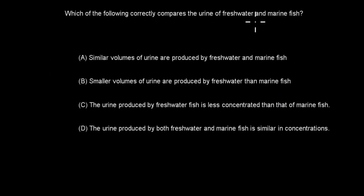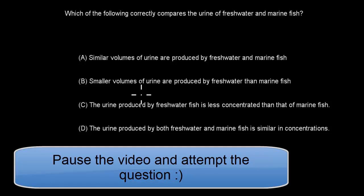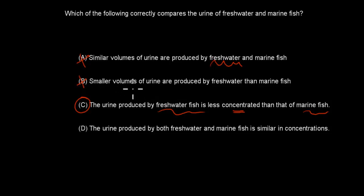Next: Which correctly compares the urine of freshwater and marine fish? A: Similar volumes produced by both. B: Smaller volumes produced by freshwater fish. C: Urine of freshwater fish is less concentrated than that of marine fish. D: Both produce urine of similar concentrations. The correct answer is C. Freshwater fish produce large volumes of very dilute urine because water constantly enters by osmosis, whereas marine fish produce concentrated urine to conserve water. Options A, B, and D are all incorrect.